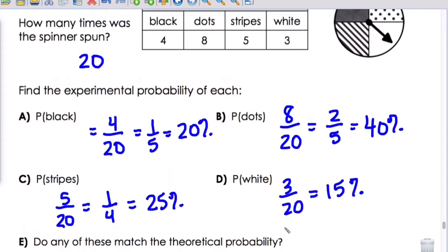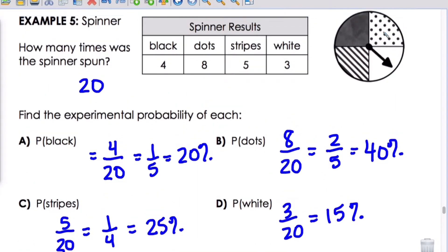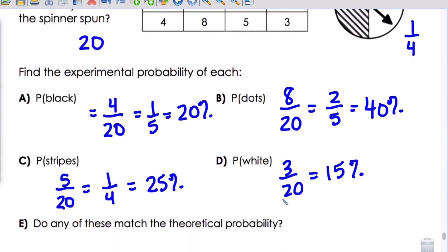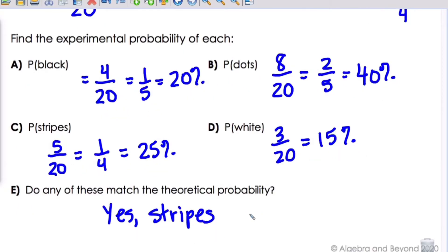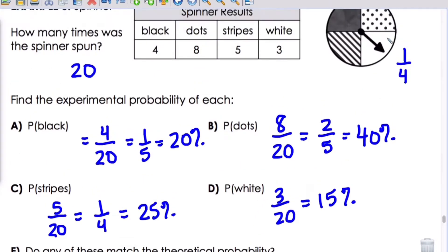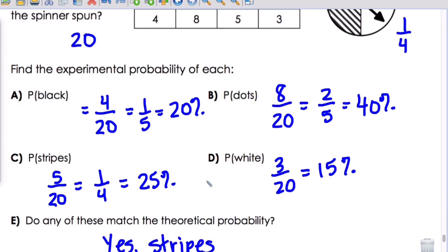Do any of these match the theoretical probability? Theoretical probability: if we have four different spaces here, we know that any single one of them would be one-fourth. So which one would match that? It would be the stripes. So we would say yes, the stripes match the theoretical probability. We can compare that, yes we have a one-in-fourth chance of spinning stripes. This is the trial so it didn't statistically come out perfect but stripes did in our scenario. And that is lesson 11.1.